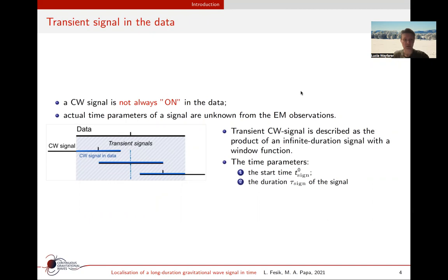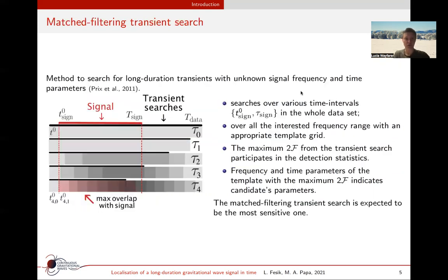Firstly, because the actual time parameters of a signal might be unknown from the electromagnetic observations. Even if the time of the glitches is precisely known, the after-glitch relaxation period is usually unknown.